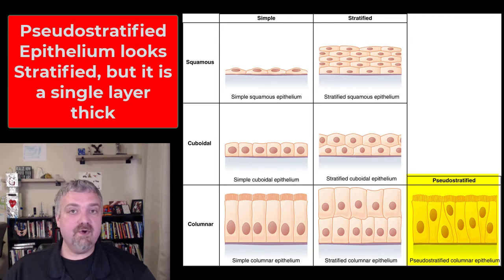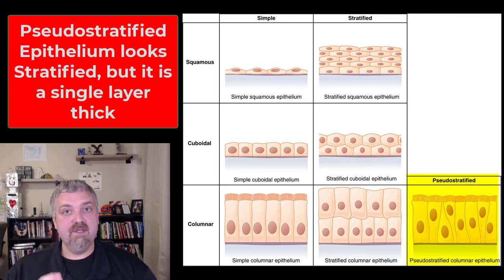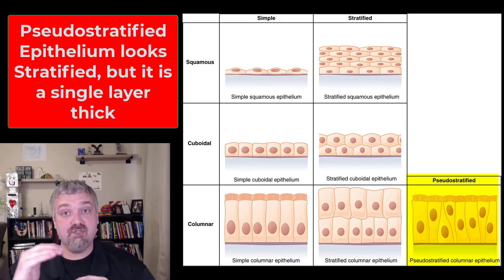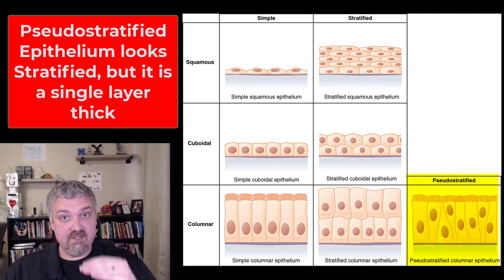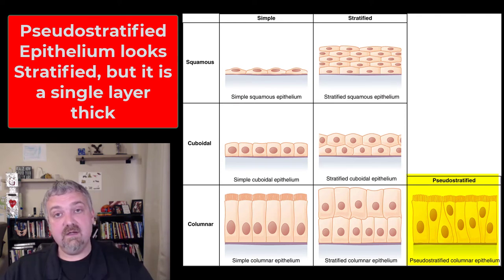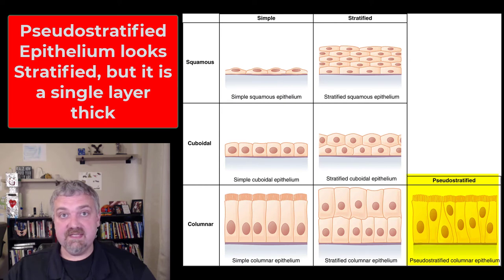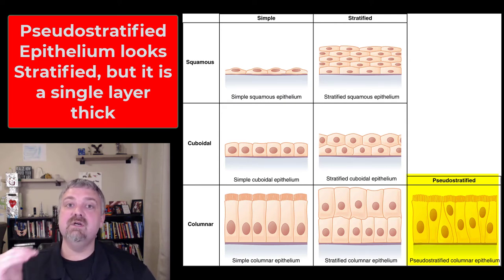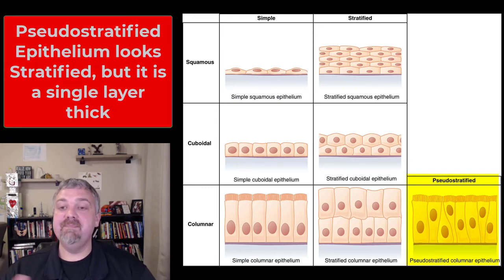You see here this pseudo-stratified in the lower right-hand corner. Pseudo means false or fake. Pseudo-stratified epithelium looks stratified because the nuclei are staggered, but every one of those cells is touching the basement membrane, touching the connective tissue. So it's a simple layer, but it looks stratified.